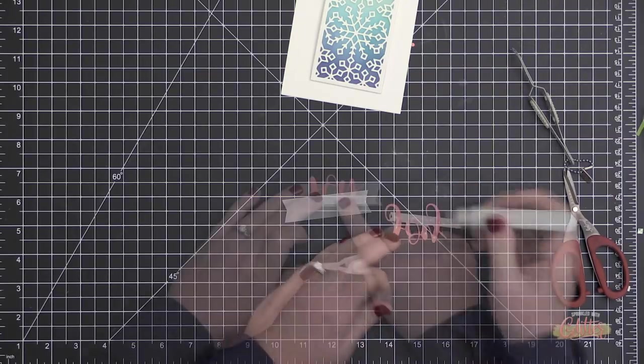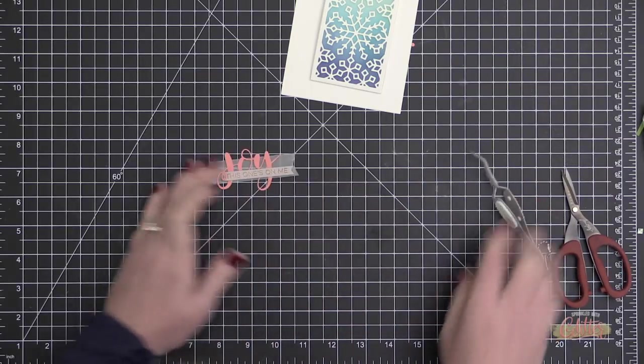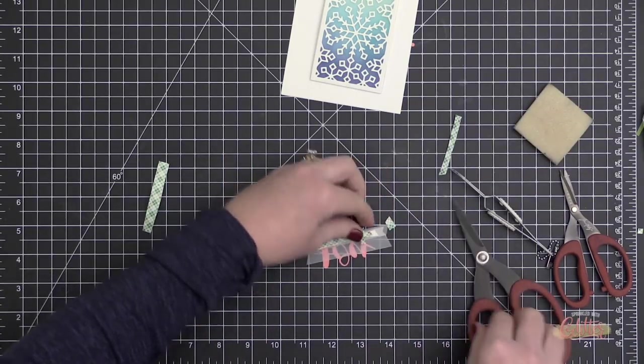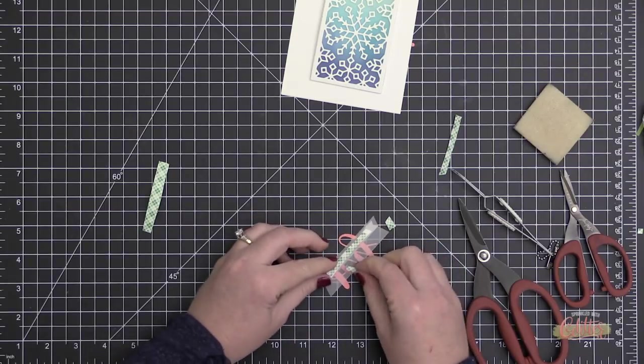Now I'm just using a little liquid glue to adhere that to that die-cut Joy sentiment, and then I'm going to use a little more liquid glue and adhere this to a vellum banner shape that I just kind of freehand cut.